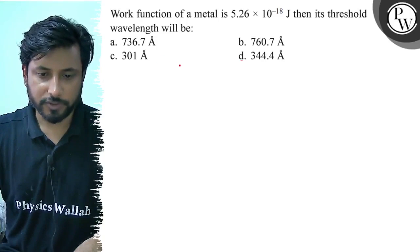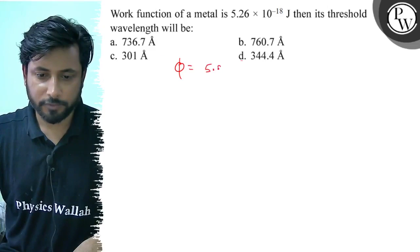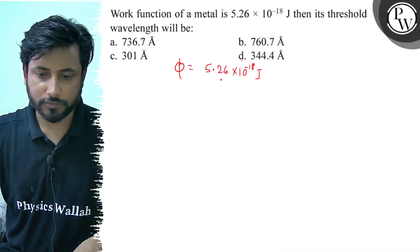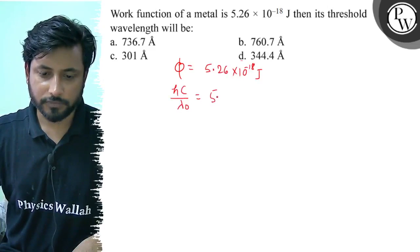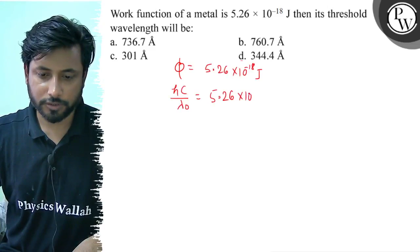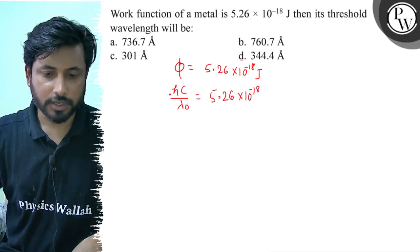So, work function of the metal is 5.26 into 10 to the power minus 18 joules. Work function ka formula kya: hc by lambda 0 equals to 5.26 into 10 to the power minus 18 joules.